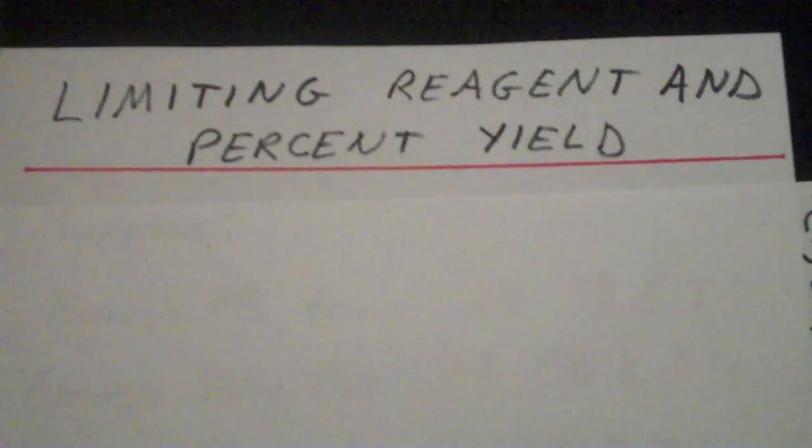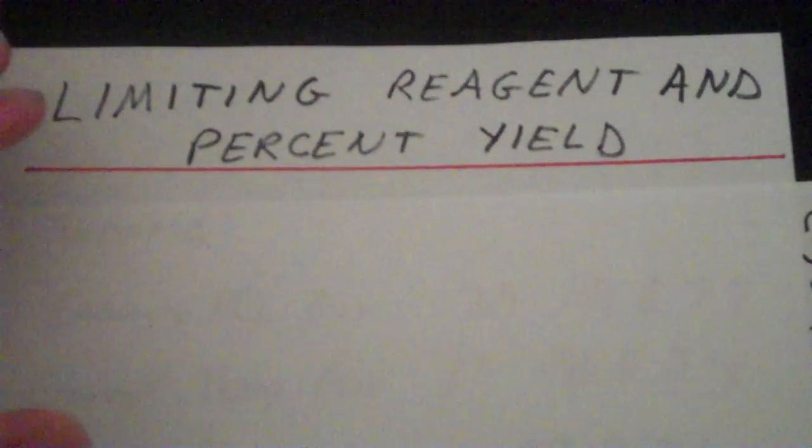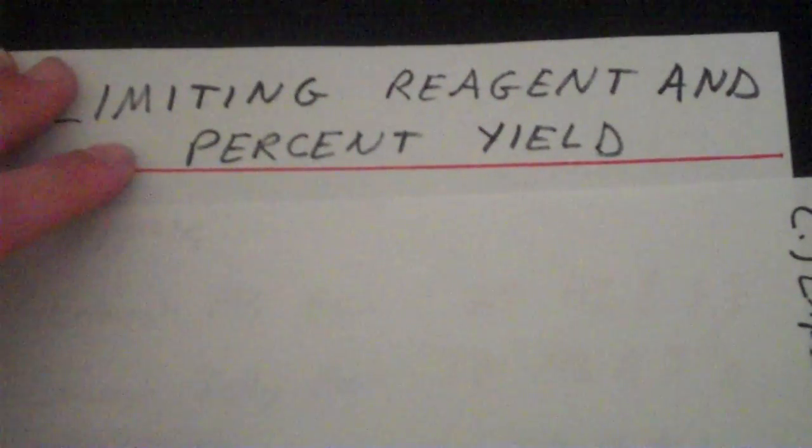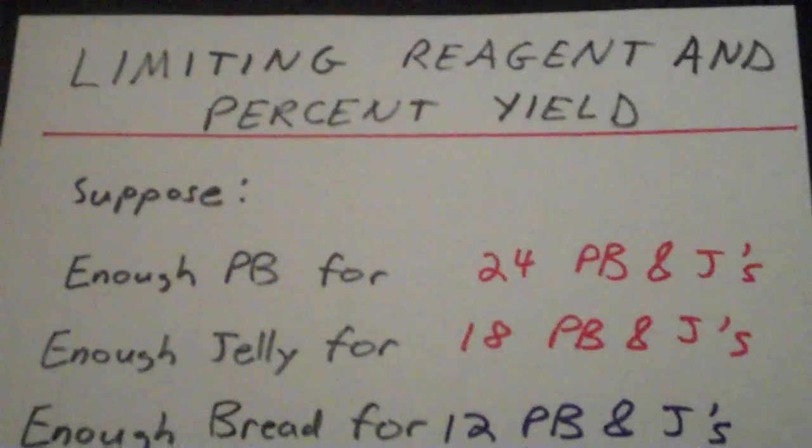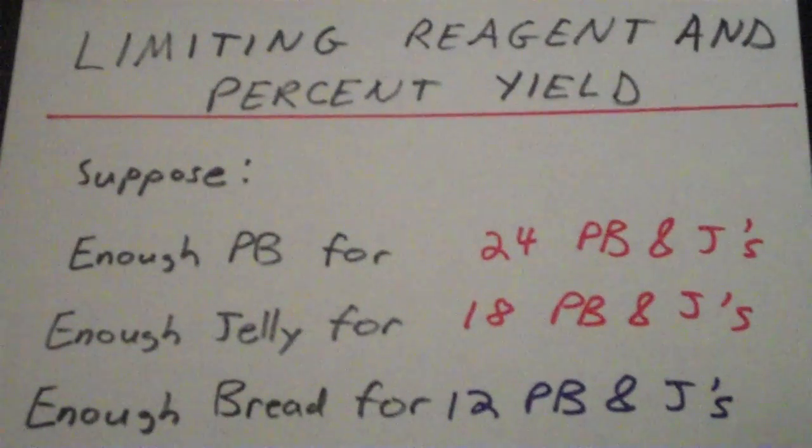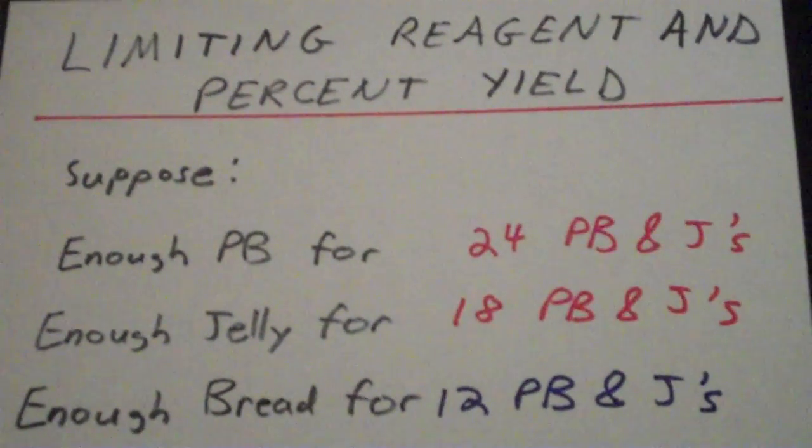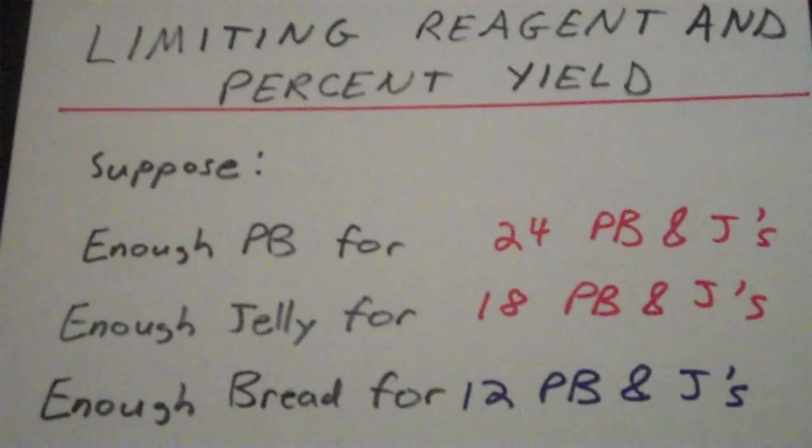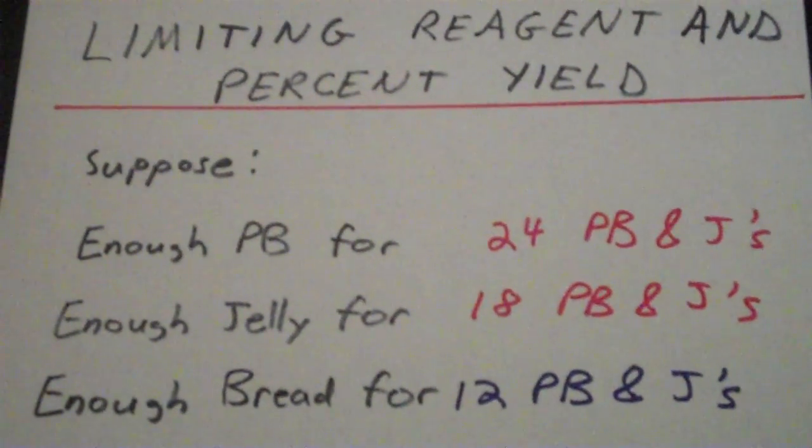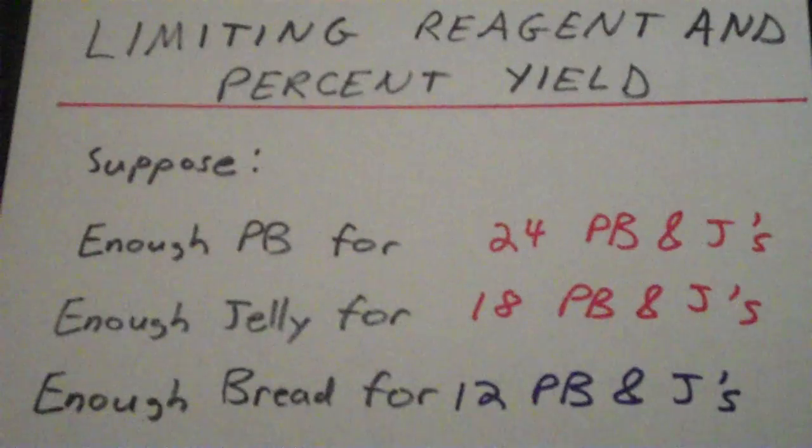Alright, so this is part two to my introduction to stoichiometry video, and in this video we're going to discuss the concept of a limiting reagent and percent yield. So to start this lesson, I'm going to start you off with a simple but very relevant analogy. Suppose you're having some guests over and you want to make as many PB&J sandwiches as possible. Maybe you're a broke college student like me and PB&J's is just about all you can afford.